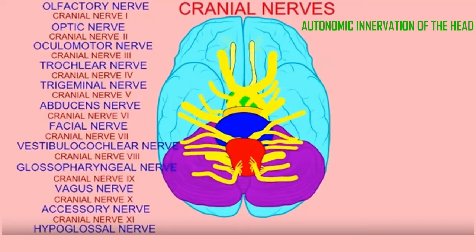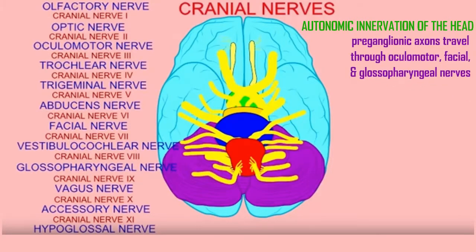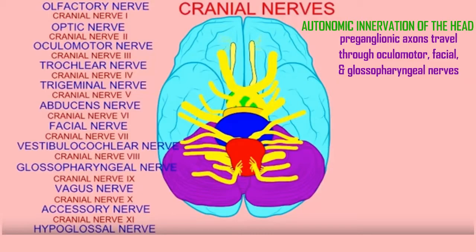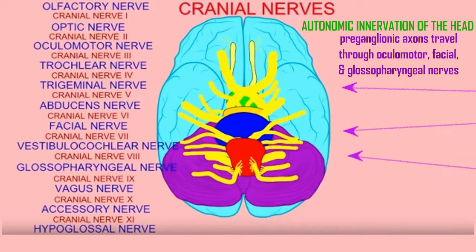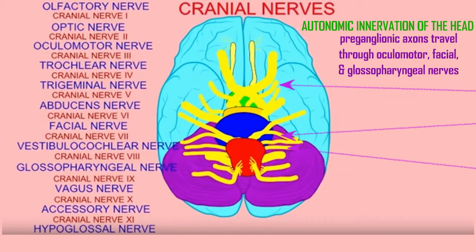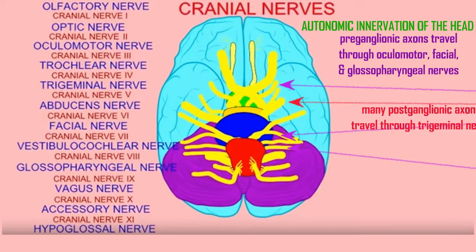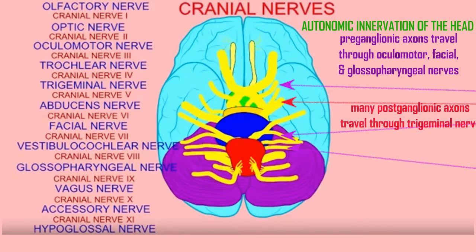The autonomic innervation of the head consists of preganglionic axons which leave the brain and travel through the ocular motor, facial, and glossopharyngeal nerves to ganglia where they synapse. The postganglionic neurons then have a number of ways to reach effector organs, but many pass through the trigeminal nerve.